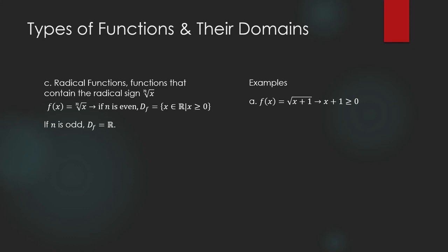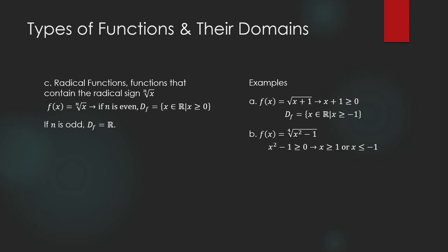Example: f(x) = √(x + 1). The index is two, which is even, so the domain is those values of x such that x + 1 ≥ 0, meaning x ≥ −1. How about the fourth root of x² − 1? The index is even, so the function is defined when x² − 1 ≥ 0, which is true when x ≥ 1 or x ≤ −1.